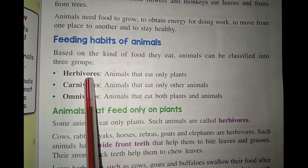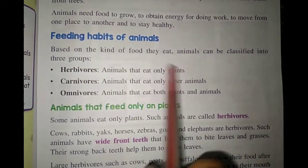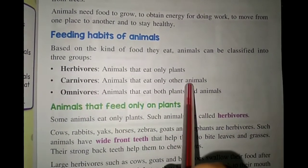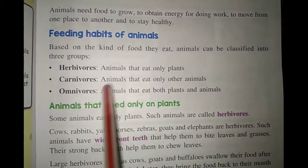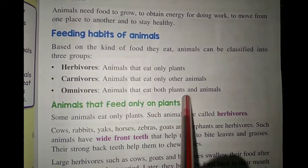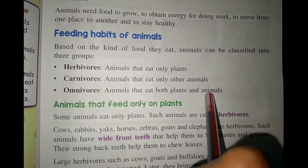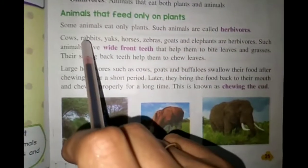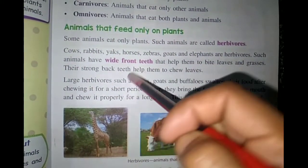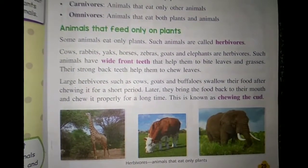The first one is herbivores — animals that eat only plants, like cow and buffalo. Carnivores — animals that eat only other animals, like tiger and lion. Omnivores — animals that eat both plants and animals, like cat and dog. We will be discussing about animals that feed only on plants in detail in the next clip.